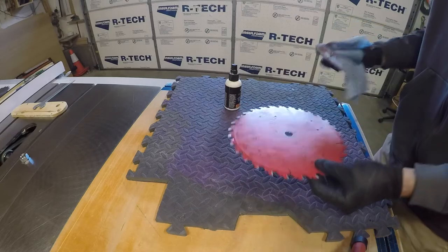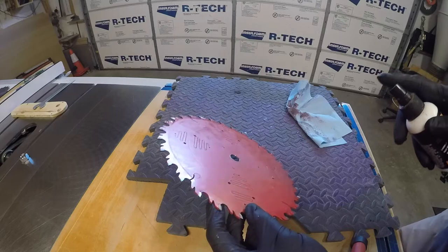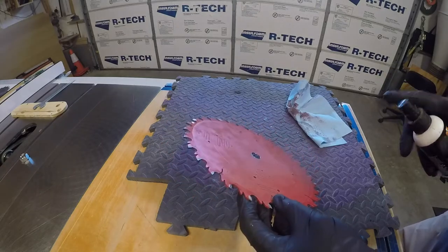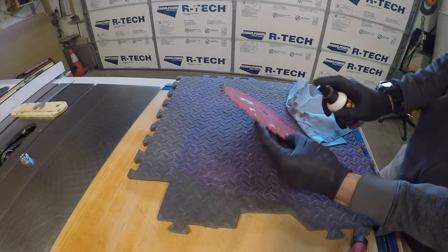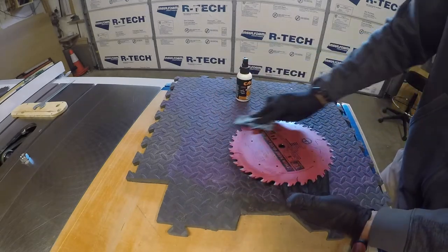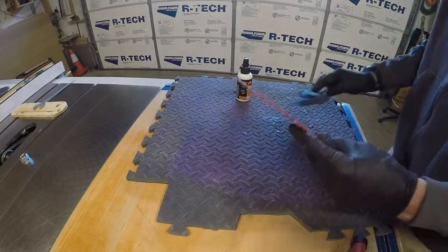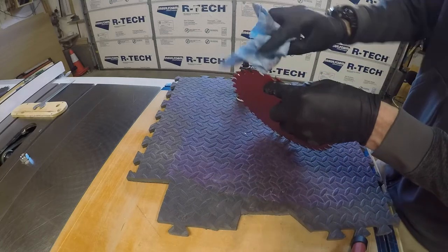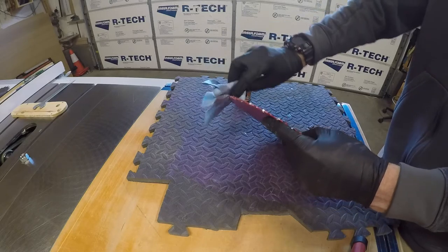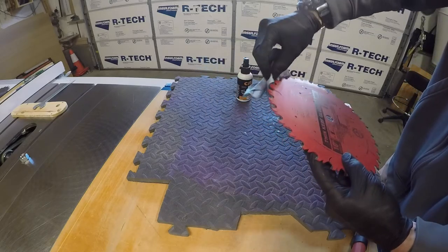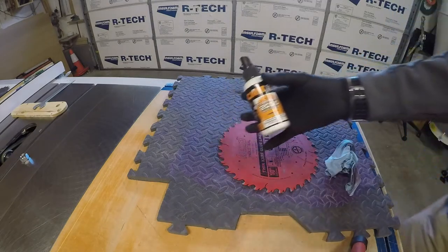Do the other side. You can kind of see it's like greasy. You could go into each gullet and clean that too if you really want to be thorough. Just go in there and wipe it. This is some good stuff right here.